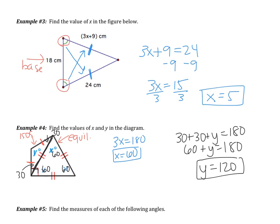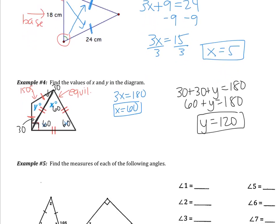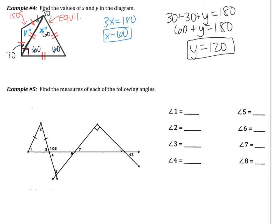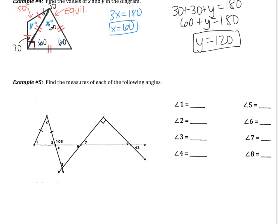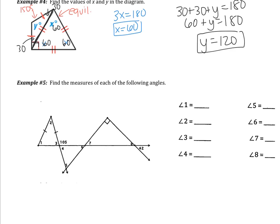If I went too fast, please make sure you rewind and re-watch that problem. Let's move on to example 5. In example 5, we have a whole bunch of different triangles and you need to find all of the measures. I'm going to start by helping you find angle 3. I know that angle 3 and 105 are supplementary, so angle 3 is 180 minus 105, which is 75. So angle 3 is 75 degrees.